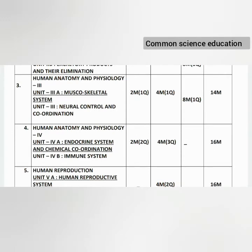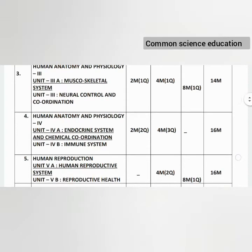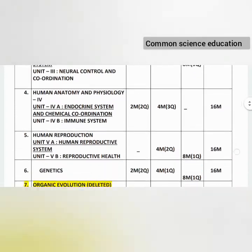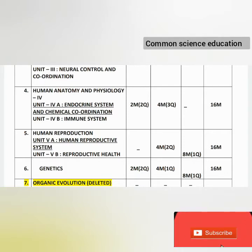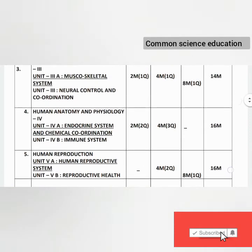Unit 4 covers the Endocrine System and Immune System, with 2-mark questions (2 questions) and 4-mark questions (3 questions), giving a total of 16 marks. Unit 5 covers Reproduction — Human Reproductive System and Reproductive Health.